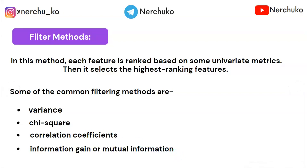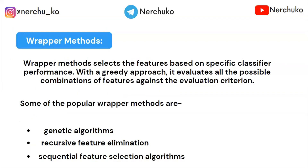For information gain, we already use it in decision trees to select features. Now let's move to wrapper methods. Wrapper methods select features based on specific classifier performance. With a greedy approach, they evaluate all possible combinations of features against an evaluation criterion.